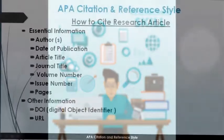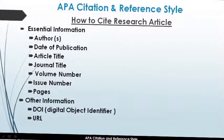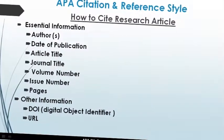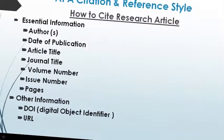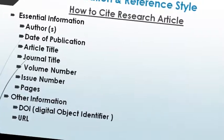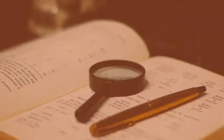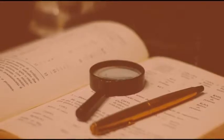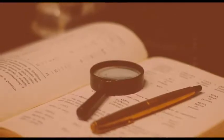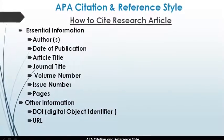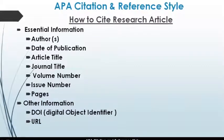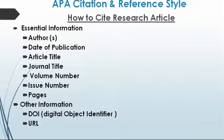The journal article has the following essential information: name of the authors, date of publication, article title, journal name, volume number, issue number, pages, and if the journal is published in online format, the DOI, URL, or website address.